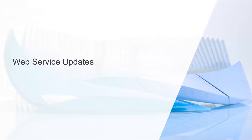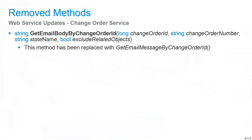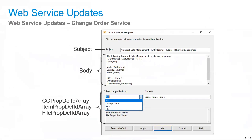There are also web service updates to the Change Order service. The existing method Get Email Body By Change Order ID has been removed and replaced by new functionality. The new implementation is a more detailed class for emails, with Subject and Body properties. New properties include CO Prop Def ID Array, Item Prop Def ID Array, and File Prop Def ID Array — these are the property definition IDs of any properties you want to include in your email.